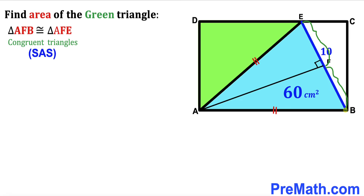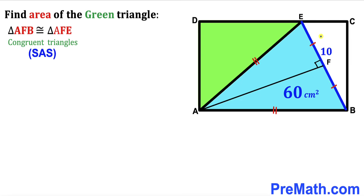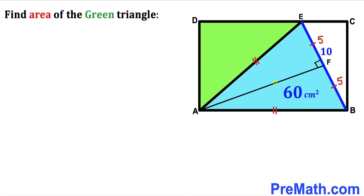Since the whole side length EB is 10 units, segment EF equals 5 and segment FB equals 5 as well. I'll label this perpendicular AF as our height h.